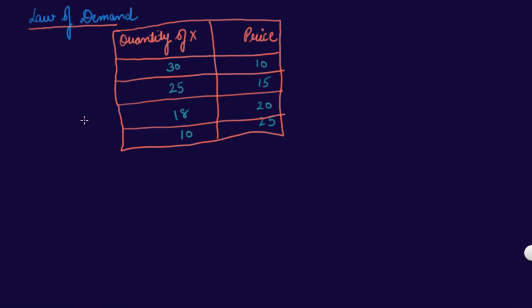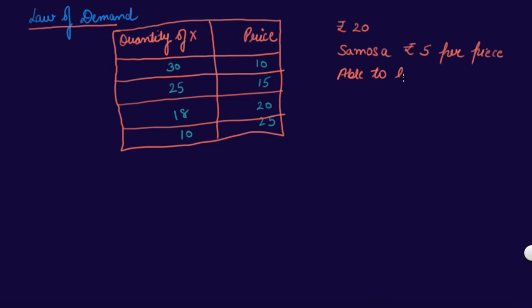The Law of Demand — let me give you an example using samosa. I don't like samosa, but I'll use it as an example. Suppose you have 20 rupees in your pocket and a samosa costs rupees 5 per piece — you are able to buy only four samosas, four units of it.